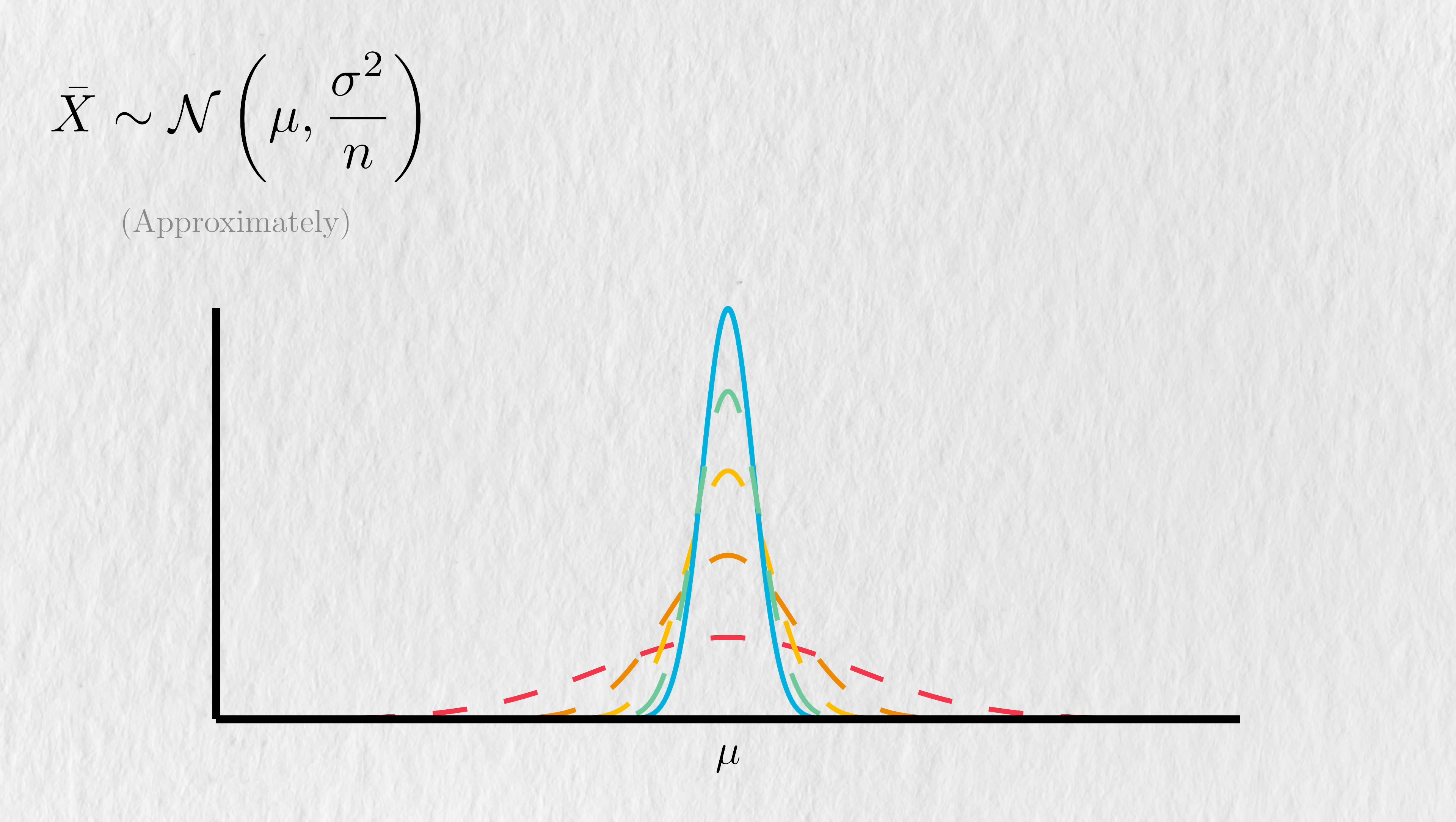This distribution stays centered around the true mean, but the variance will decrease with sample size. Since this is a normal distribution, a majority of the sample means you might see will be close to the true mean. If we gathered even more data, then this distribution will slowly develop into a very thin spike.